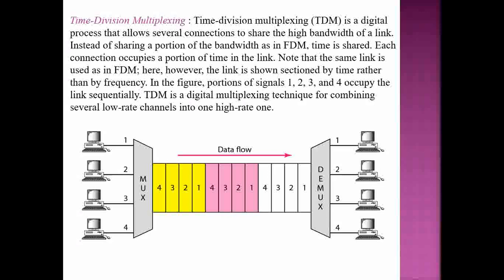TDM is a digital multiplexing technique for combining several lower-rate channels into one high-rate channel. The digital signals — one, two, three, four — use one channel but are differentiated by time slots. The demultiplexer splits according to the time slot given to each signal. The key concept is sharing time, as opposed to sharing frequency as in FDM.